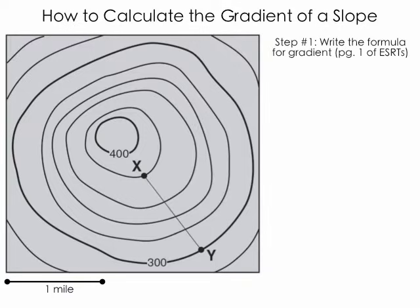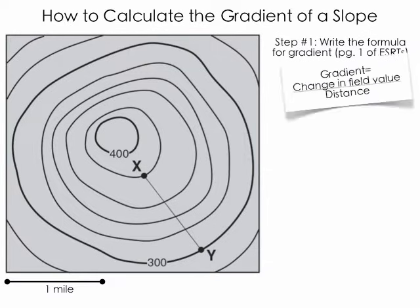Now, the best place to start is, of course, with the formula, so we should all record the formula for gradient, which can be found on page one of the reference tables. There, you will see that gradient is equal to the change in field value divided by the distance.